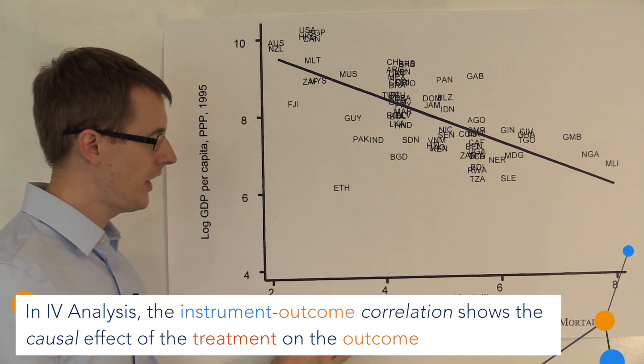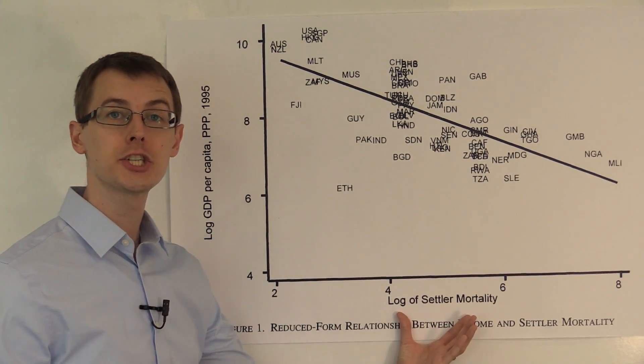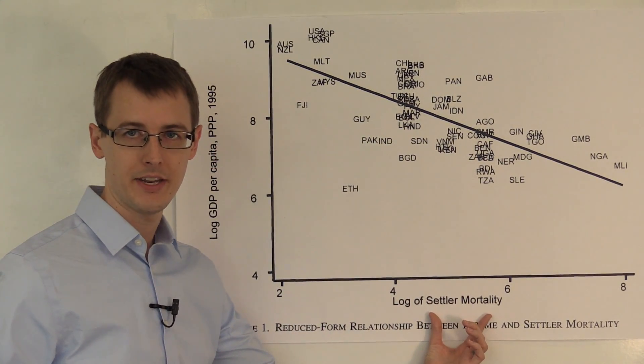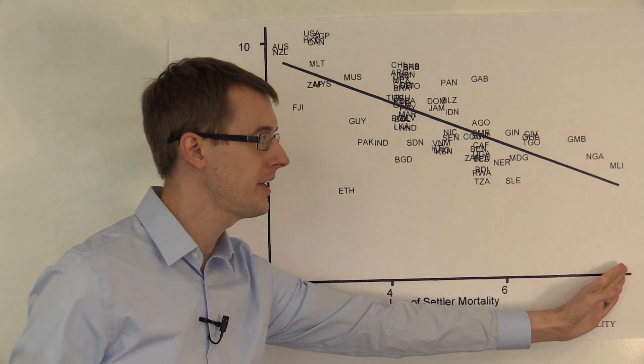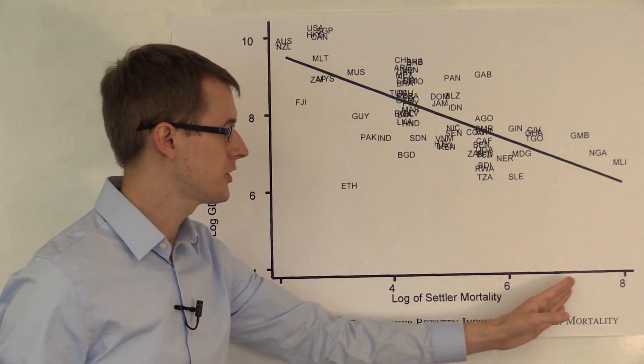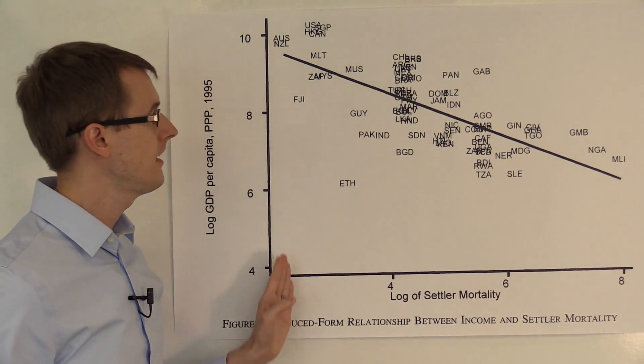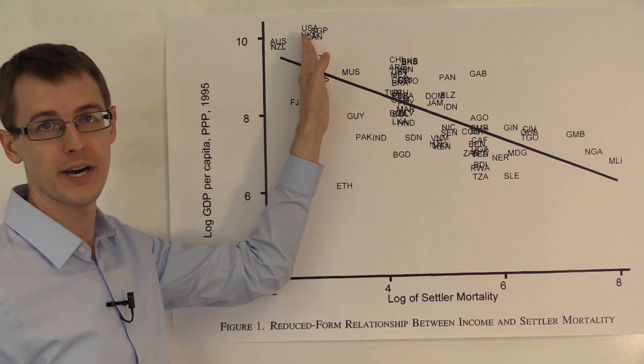So here on the horizontal axis, we've plotted the instrument, log settler mortality. So countries with higher mortality are over here, like Mali. Countries with lower settler mortality are over here, like Australia and the US.